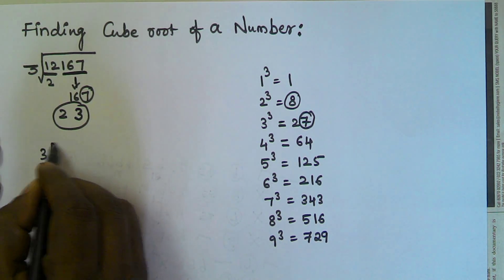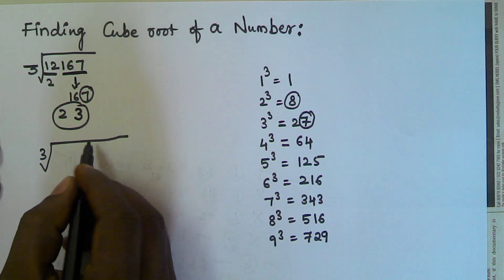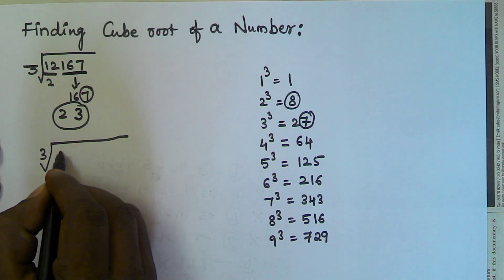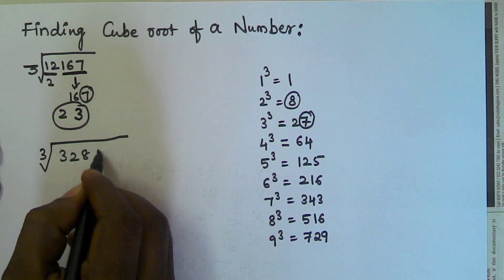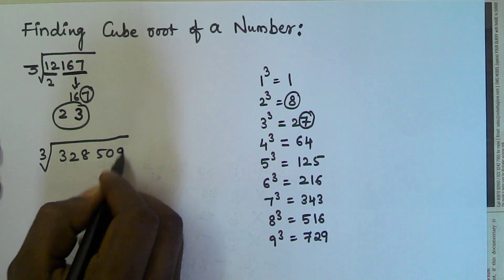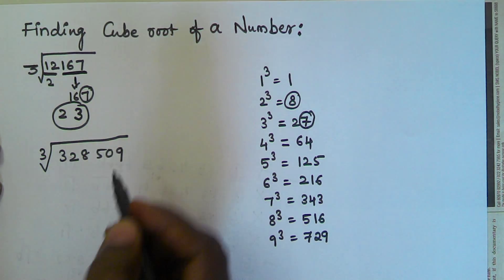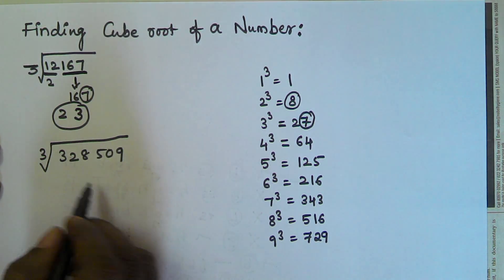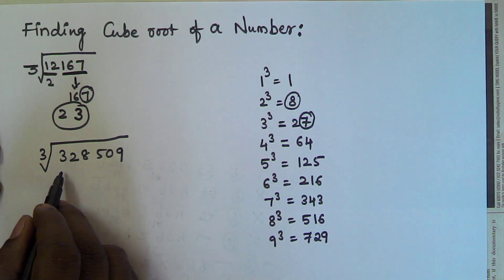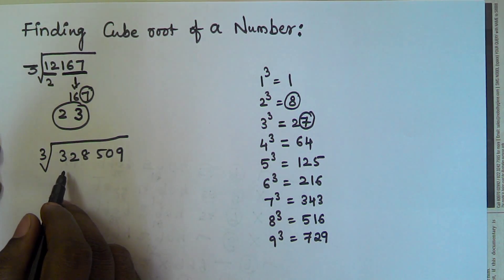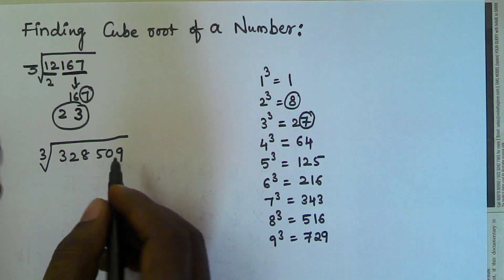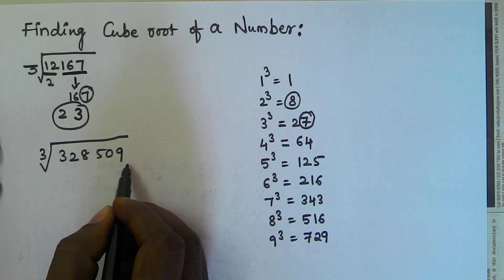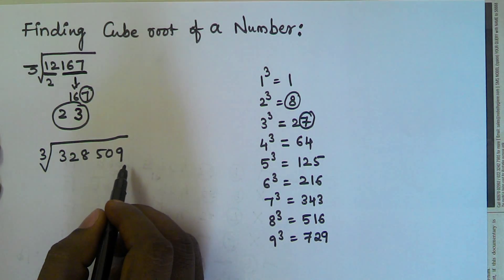Let's see another example: the cube root of 328509. The first step is to divide the given number into parts starting from the rightmost.